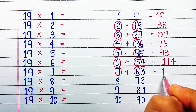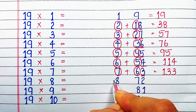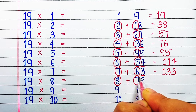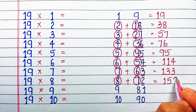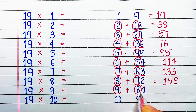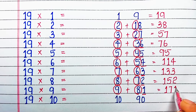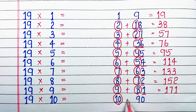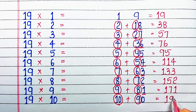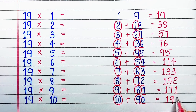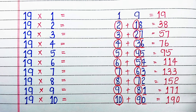Next 7+6=13 and we write unit digit 3, making 133. Next 8+7=15 and then 2 as it is, making 152. 9+8=17 and we write unit digit 1 as it is, making 171. Then 10+9=19 and we write unit digit 0, making 190.